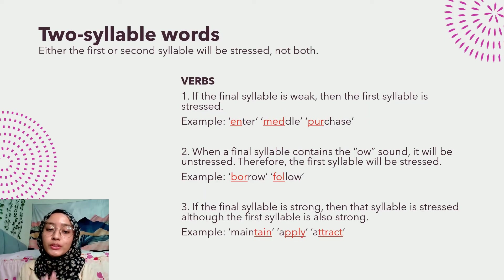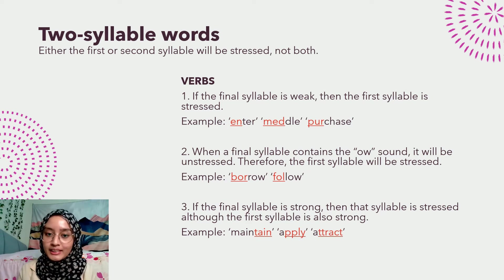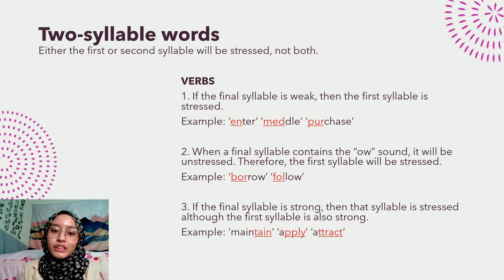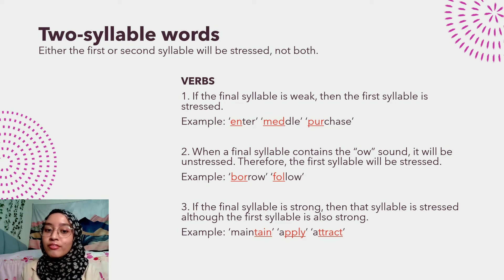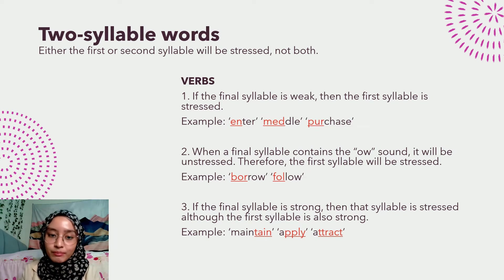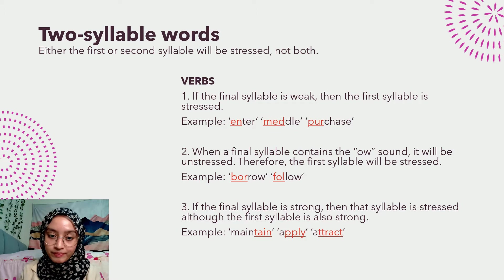Now for two syllable words, there can only be one syllable that is stressed. It's impossible to stress on both syllables because it would not make much sense, especially in English. We're going to go by each grammatical category of words starting with verbs. First of all, if the final or second syllable is weak, then the first syllable will be stressed. For example, the word 'enter', 'medal', 'purchase'.